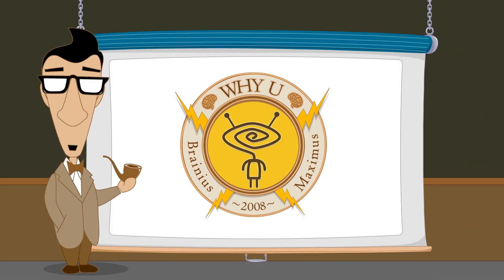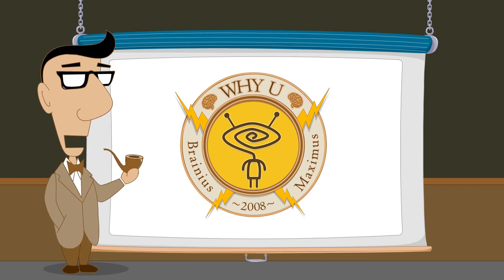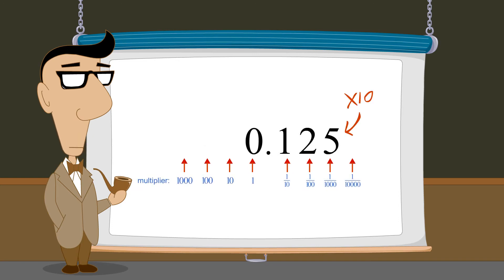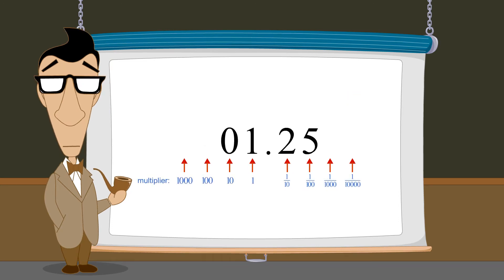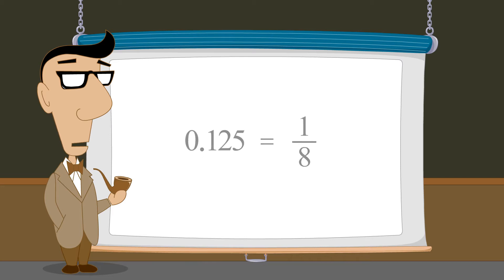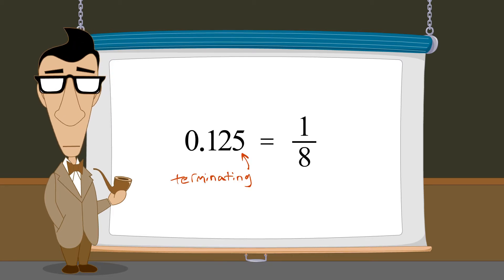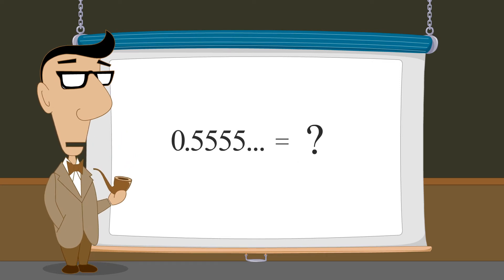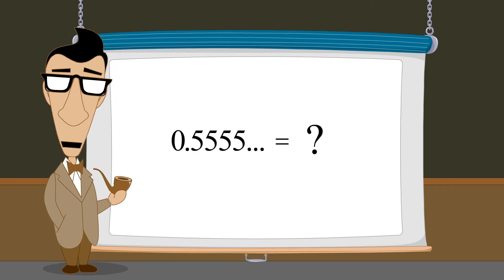Hello, I'm Professor Von Schmohawk and welcome to Why U. We have seen that multiplying any decimal number by ten shifts each digit in the number one column to the left. In the last lecture, we used this trick to convert decimal numbers with a finite number of digits into fractions. In this lecture, we will see how to convert repeating decimal numbers into fractions.